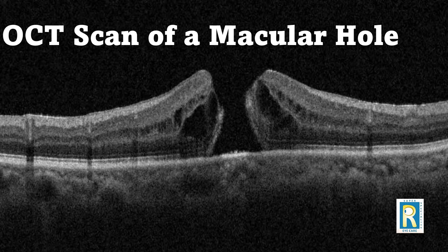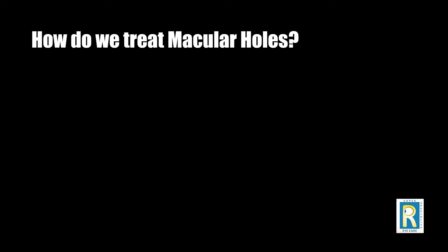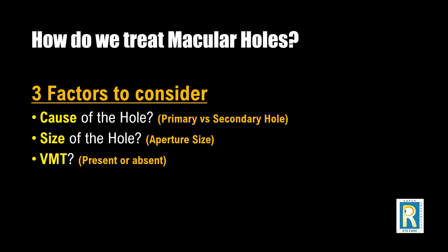If a macular hole occurs, you can see a defect like this — a break in the retina through and through at the center of the macula.